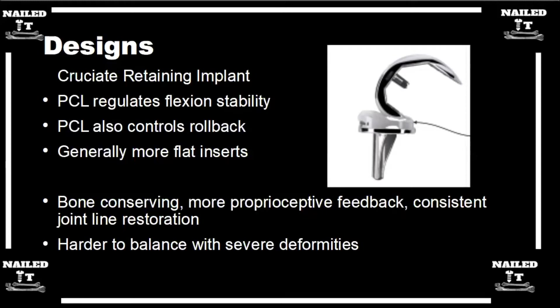The least constraining implant doesn't have a box or a cam post. The least constrained design would be a cruciate retaining implant. The goal of this design is to retain the PCL — keeping that in place provides some stability and the patient should have a good result. At one point there was an even lower constraint design, a bi-cruciate implant where you would retain both the ACL and the PCL, but that didn't work out very well. It had a lot of failure rates and was taken off the market.